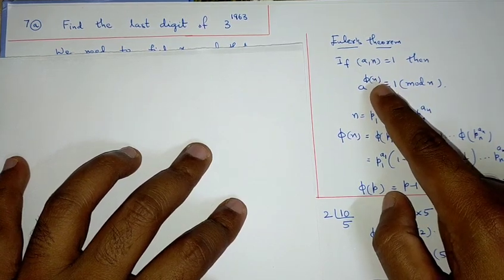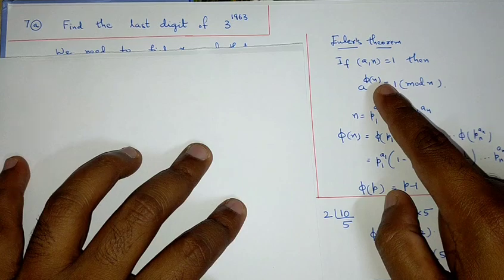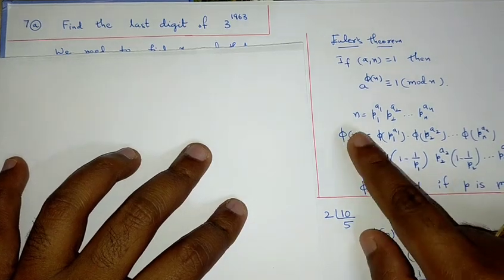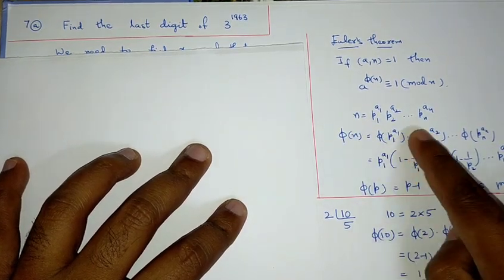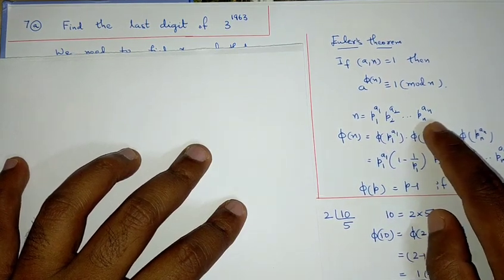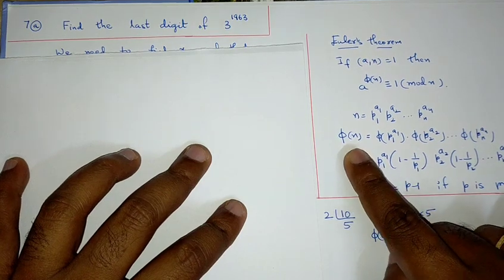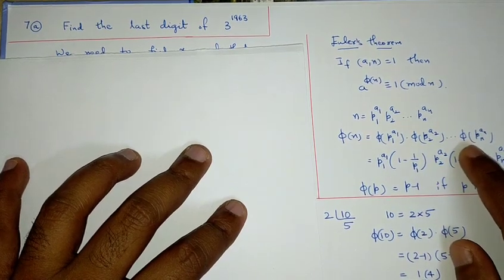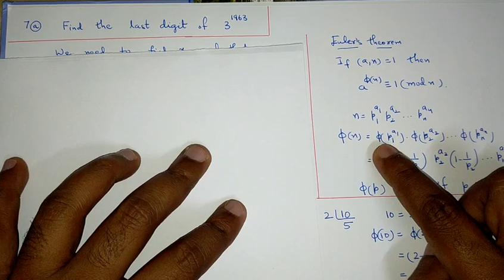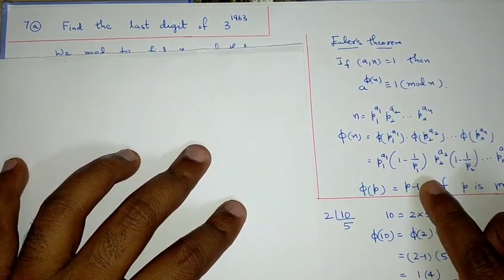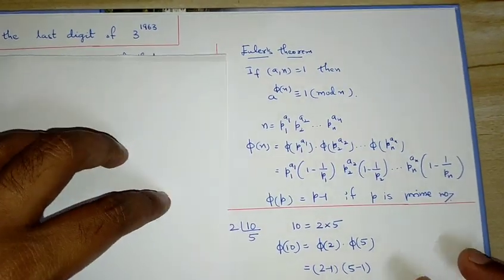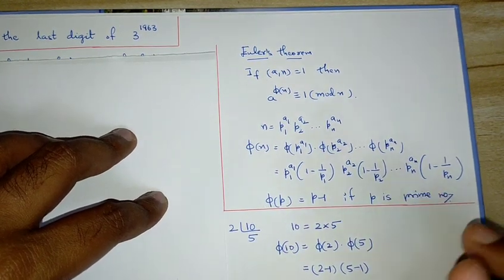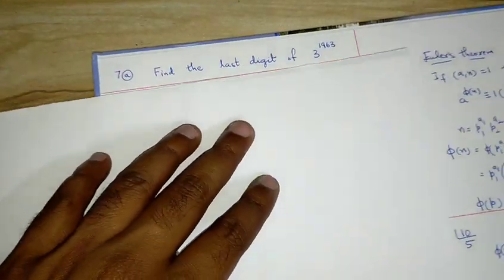φ(n) is the Euler phi function — the number of positive integers less than n and relatively prime to n. For the canonical representation of n as p1^a1 · p2^a2 · ... · pk^ak, the Euler phi function is φ(n) = φ(p1^a1) · φ(p2^a2) · ... · φ(pk^ak), where φ(p^a) = p^a · (1 − 1/p). If p is prime, then φ(p) = p − 1.